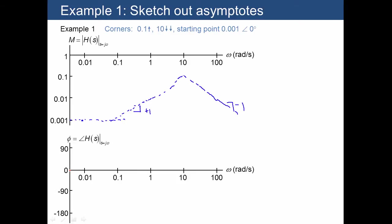Similarly for phase, we start off with 0 phase, and then at 0.1 we head towards 90 degrees. When we hit 10 we have a two-down-arrow change, so we need a change in phase of 180 degrees. These asymptotes give us enough information to sketch in the actual values, so I'm going to draw in the curves that roughly follow the asymptotes.